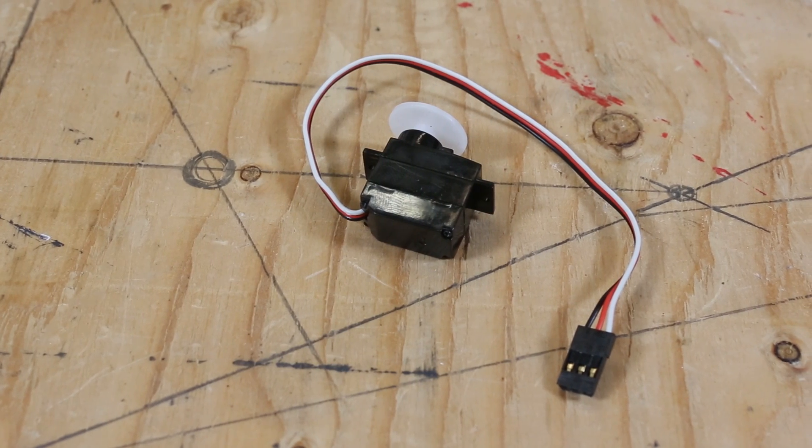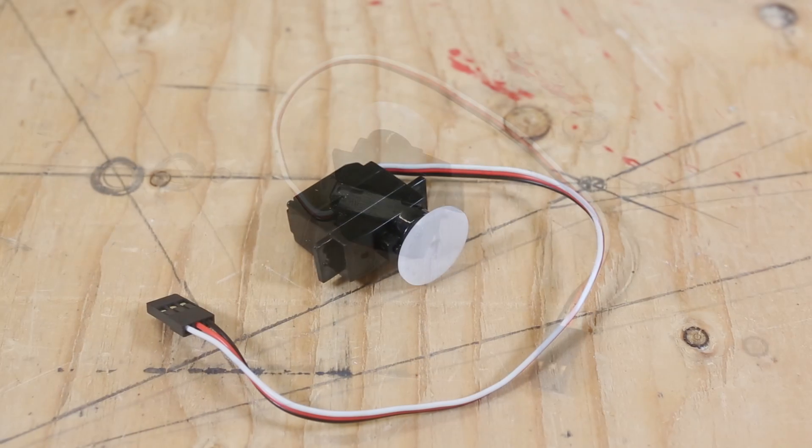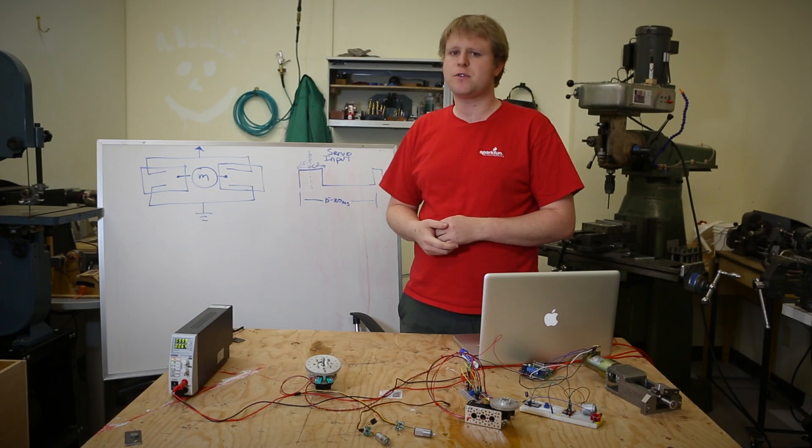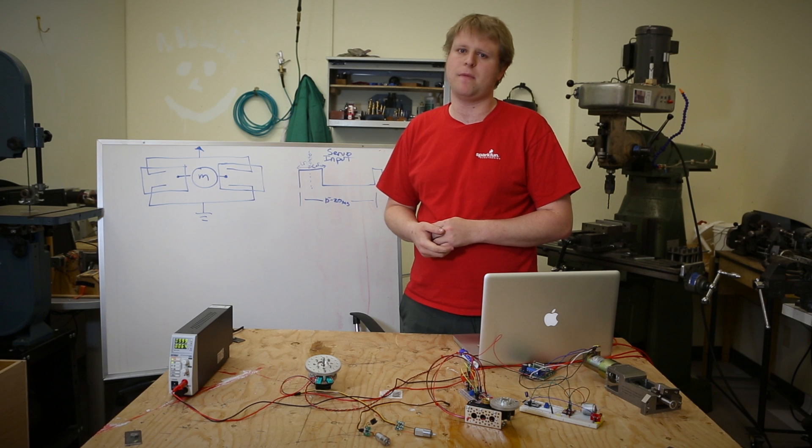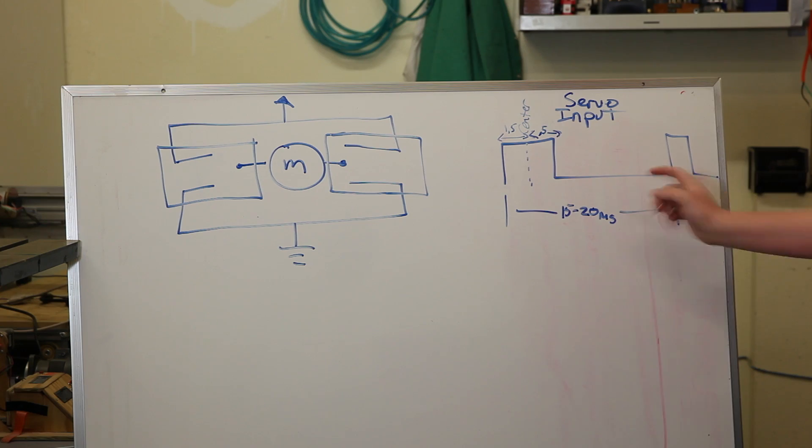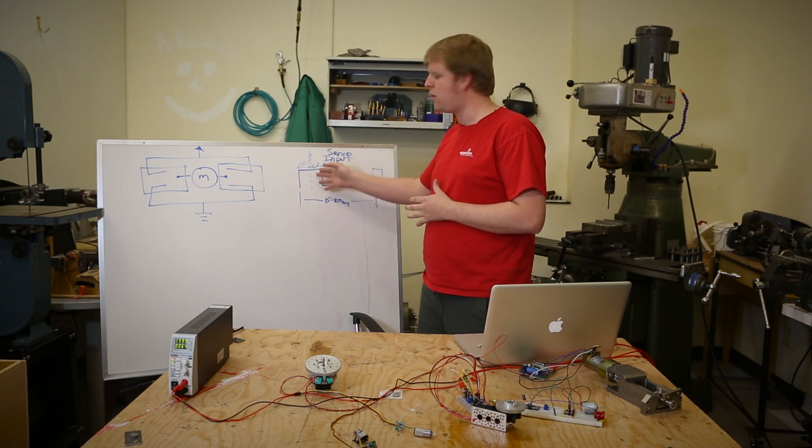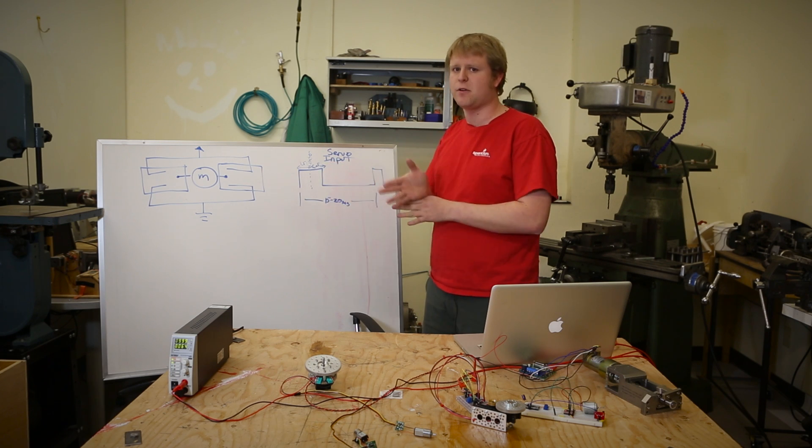We're going to start with the simple servo. You can find hobby servos on our website and other websites. Servos are controlled using PWM, pulse width modulation. As you can see on the board, the pulse width is the information telling me where I want to drive the servo. The pulse is typically between 1 to 2 milliseconds with 1.5 milliseconds being the center of the servo, which we call zero degrees.